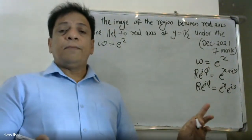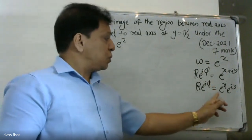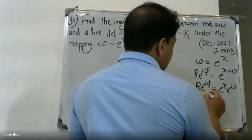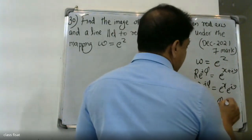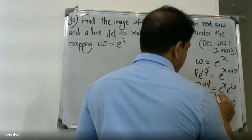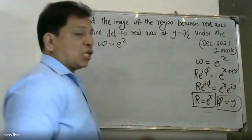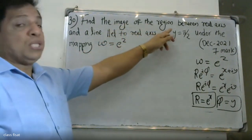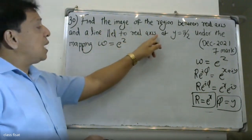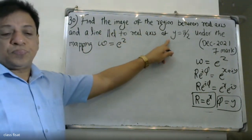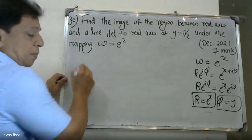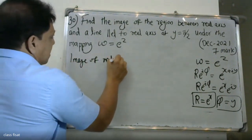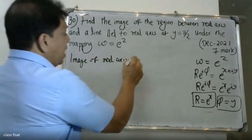Comparing, we get r = e^x and φ = y. Now we find the image of the region between the real axis and the line parallel to the real axis at y = π/2. The image of the real axis, where y = 0, gives φ = 0.